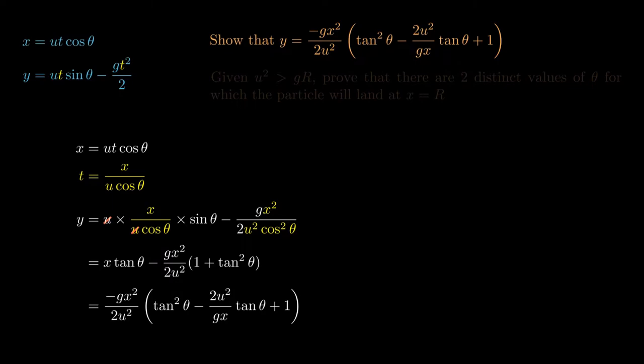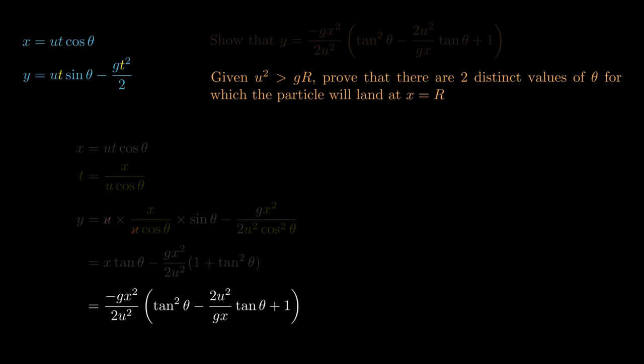The next part we'll take it from this end result here. It asks to show there are two launch angles for which the particle lands at some set range r. Now here's the tricky part. All this time we've been treating things like X and Y and time t as our variables with things like U and theta constant. But that's no longer the case.